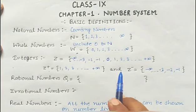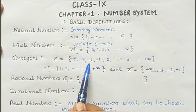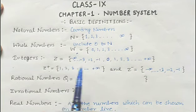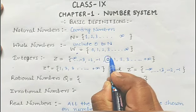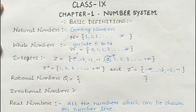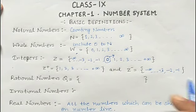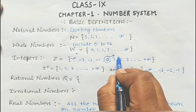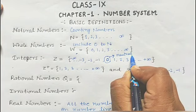Now what about 0? We have seen that 1, 2, 3 and so on is positive integers, and minus 1, minus 2, minus 3 is negative integers. So 0 is neither a positive nor a negative number — 0 is neutral, 0 is a neutral number.